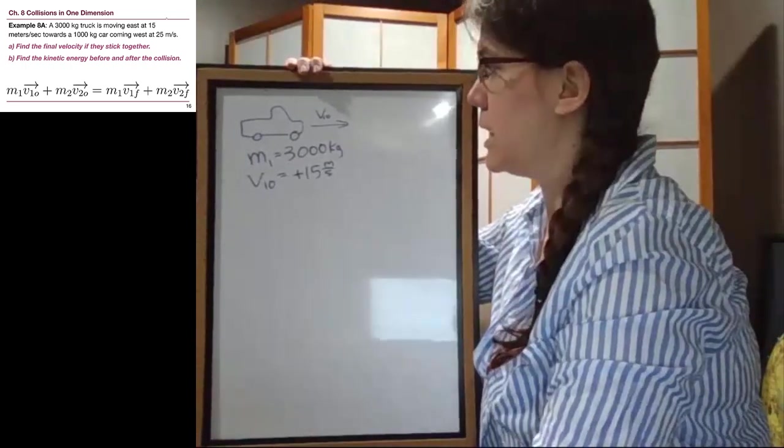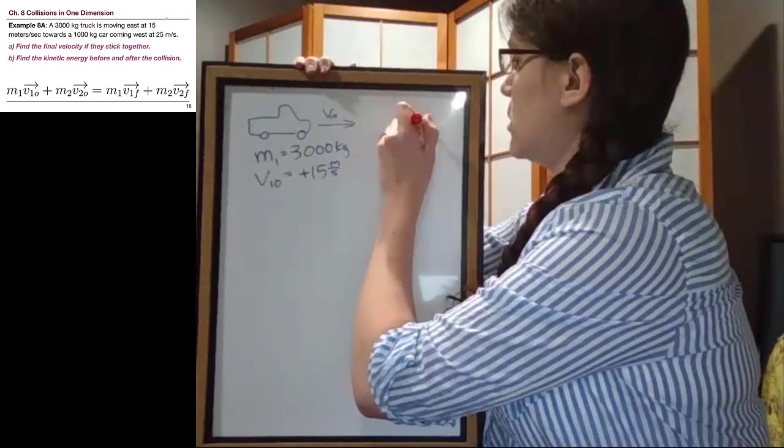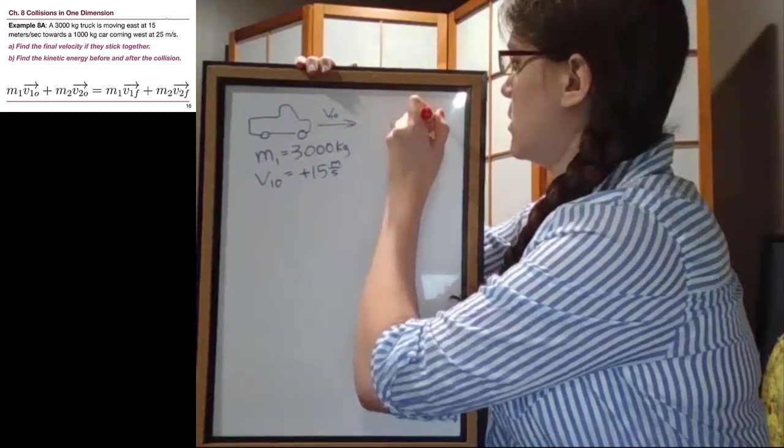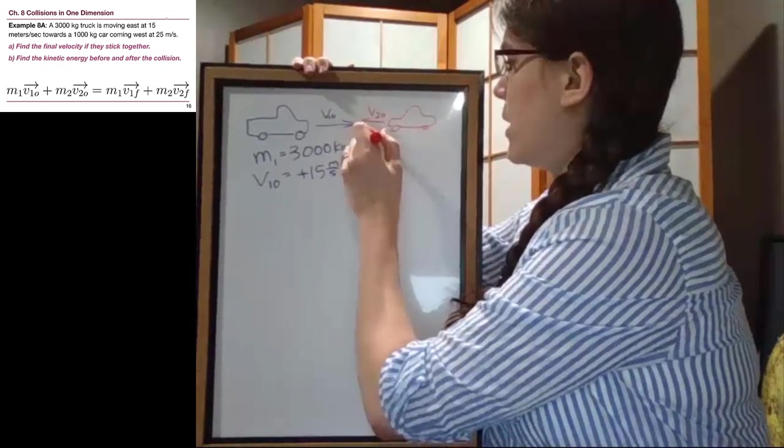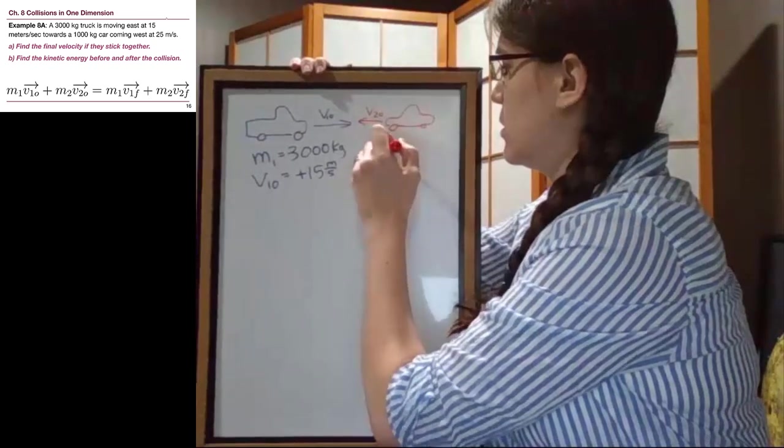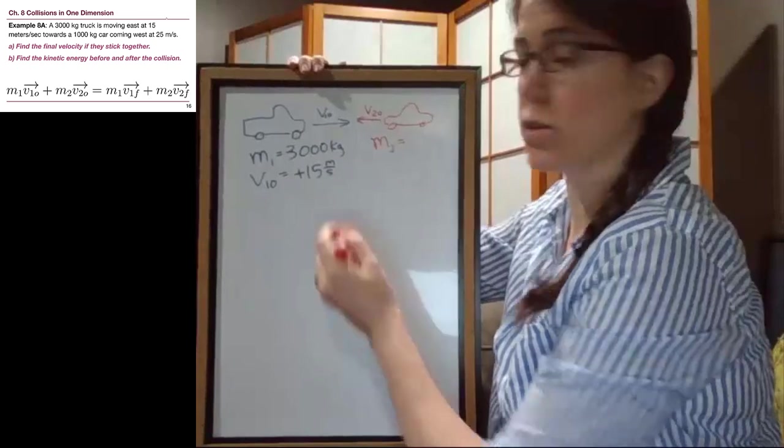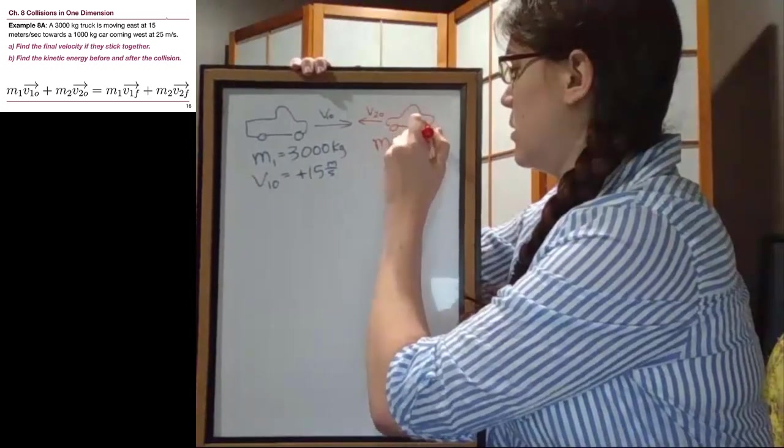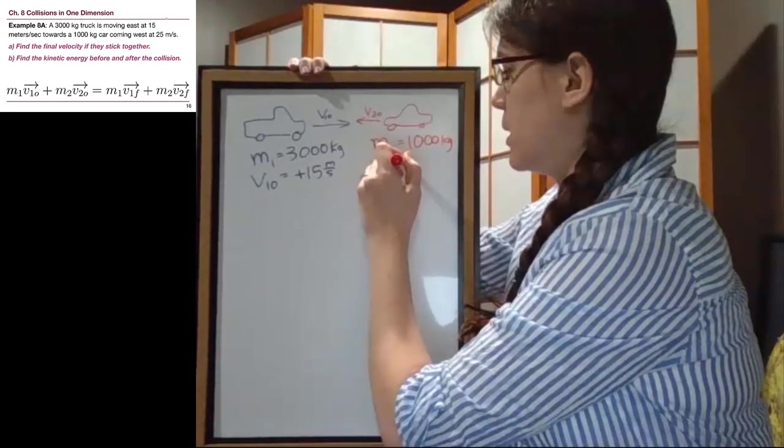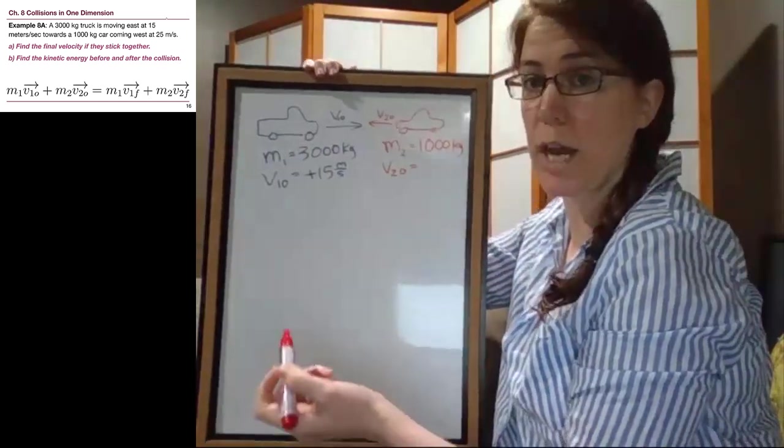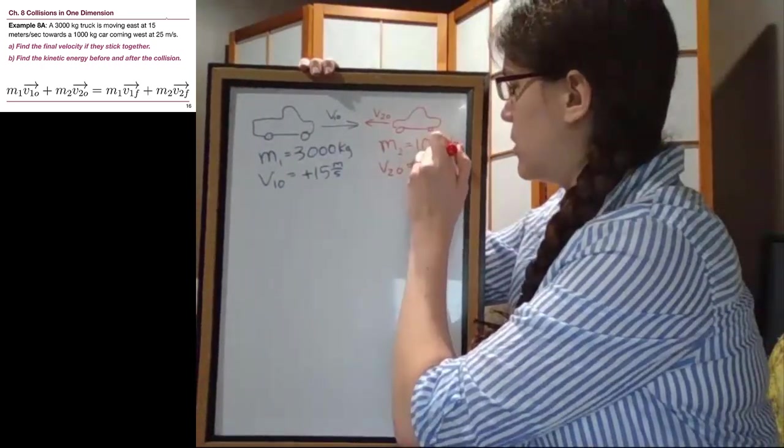And the other object is a car, a little car moving to the west. That mass is 1,000 kilograms, and that initial velocity, because it's pointing the opposite direction, is going to be negative 25 meters per second.